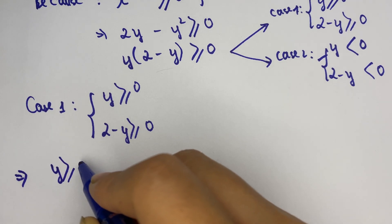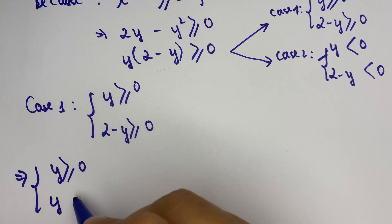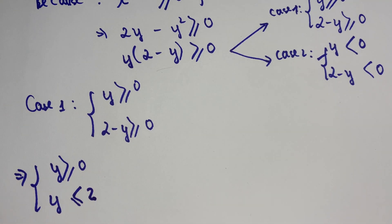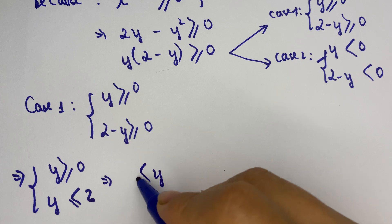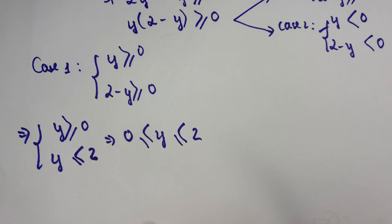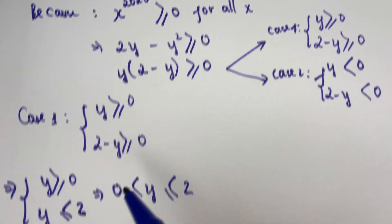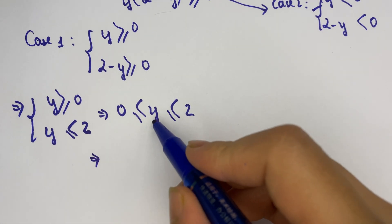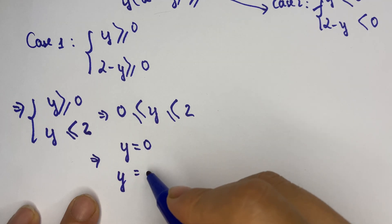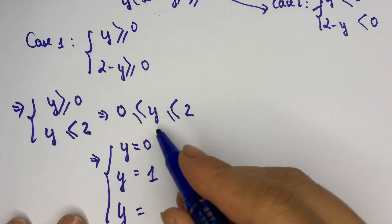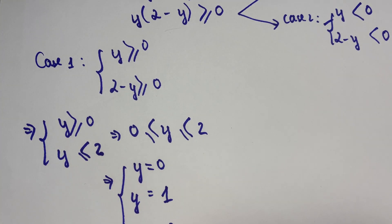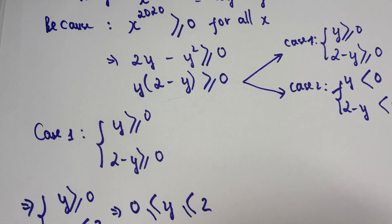So in case one, we can write y is greater than or equal to zero and y is less than or equal to two. Because y is an integer number, we have three values of y: y equals zero, y equals one, and y equals two.